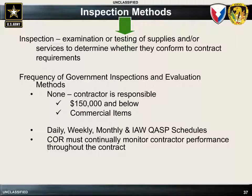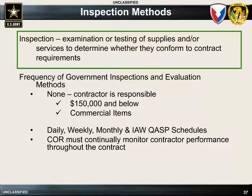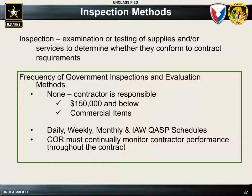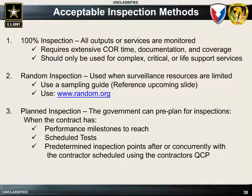Different inspection methods can be used by the COR to evaluate the contractor's performance. An inspection is defined as the examination or testing of supplies or services to determine whether they conform to contract requirements. The frequency of government inspection will be determined by the circumstances of the individual contract and can occur daily, weekly, monthly, etc., and must continue throughout the life of the contract. There are five acceptable inspection methods. The first is 100% inspection, where all outputs or services are monitored — normally used only for complex, critical, or life support services due to the extensive time and expense involved. The next method is random inspection, where a sample of outputs or services are evaluated and are representative of the entire lot, with the sample randomly chosen and a valid sample size used.